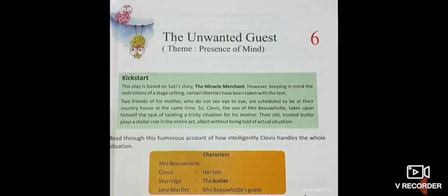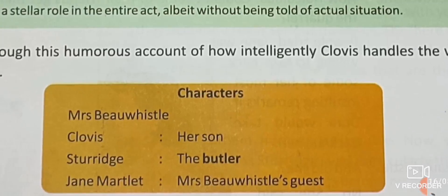We can see the characters here. Read through this humorous account of how intelligently Clovis handles the whole situation. The characters are: Mrs. Bewissel, the mother of Clovis; Clovis, Bewissel's son; Sturridge, the name of the butler; and Jane Martlett, Mrs. Bewissel's guest and friend.